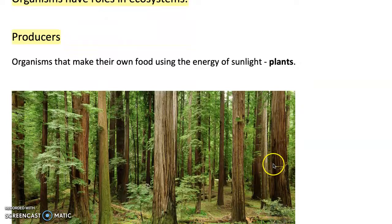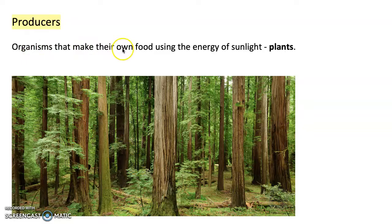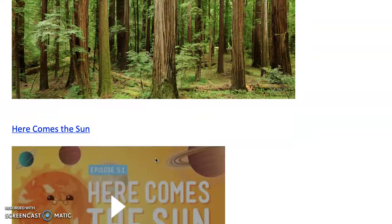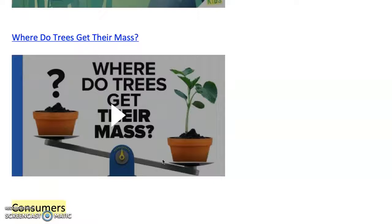Organisms have different roles in ecosystems. The first one we'll talk about — really, really important — is producers. Producers are organisms that make their own food using the energy of sunlight. These are plants. Plants undergo photosynthesis; they take in carbon dioxide from the atmosphere, water, and sunlight, and turn that into oxygen and sugar, which is food. This can be consumed by other organisms, so plants are really important — the start of food webs and food chains.